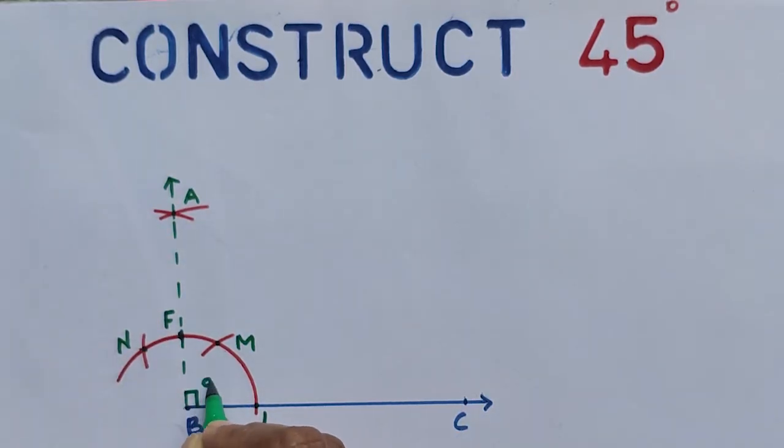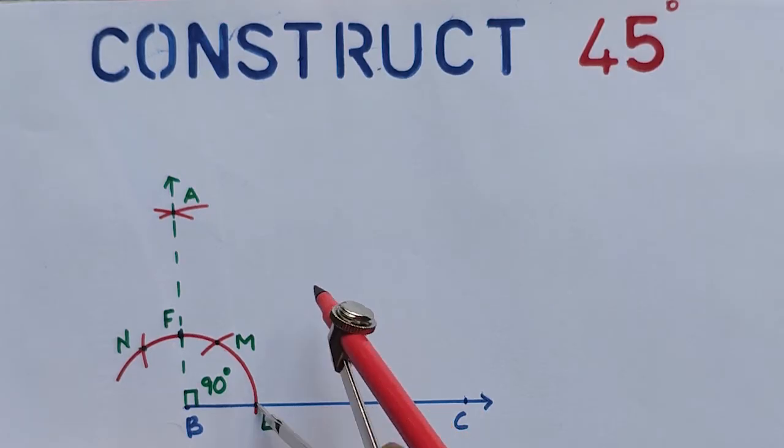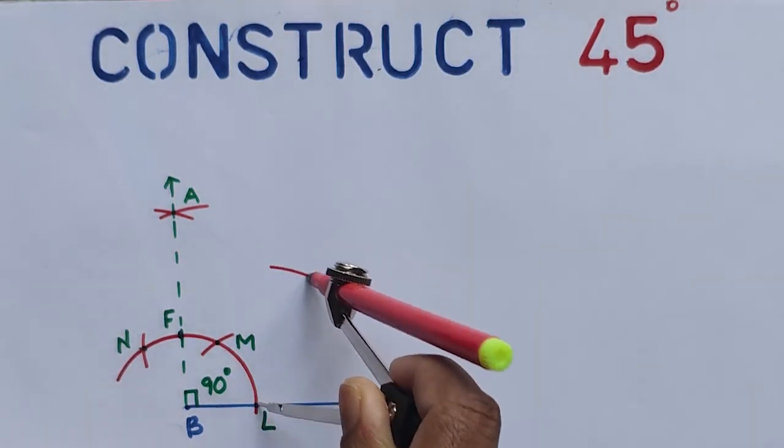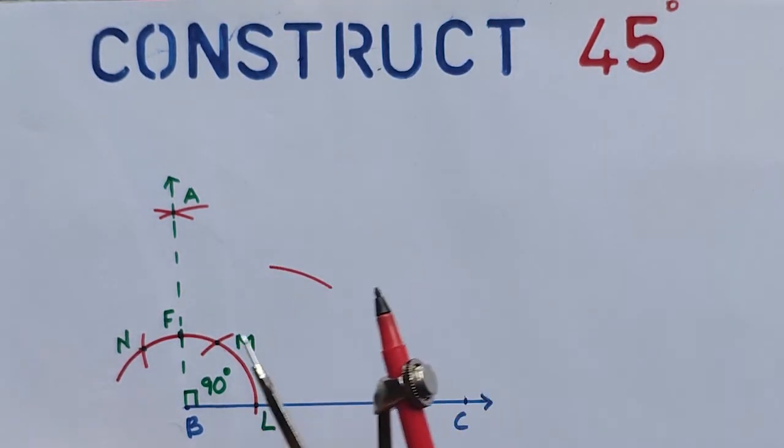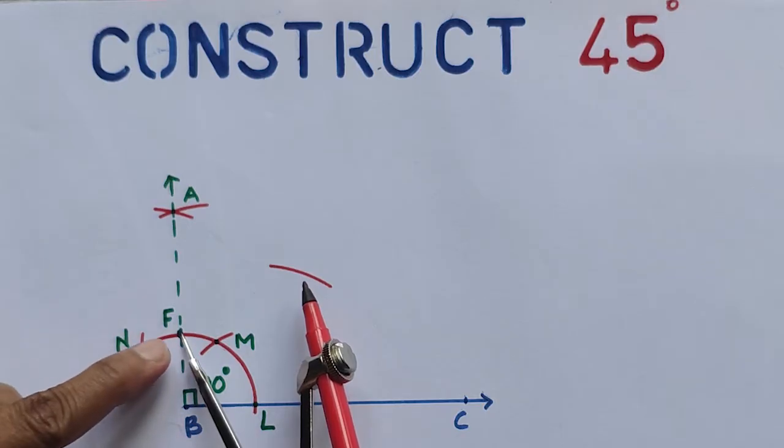If we bisect 90 degrees, we will get 45 degrees. For bisecting, we have to place the metal tip of the compass on L, then draw an arc. Then place the metal tip on F, because FBL is 90 degrees.